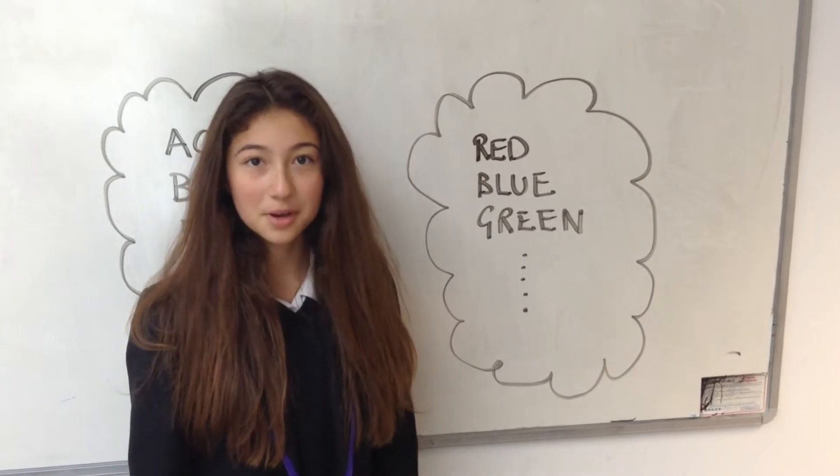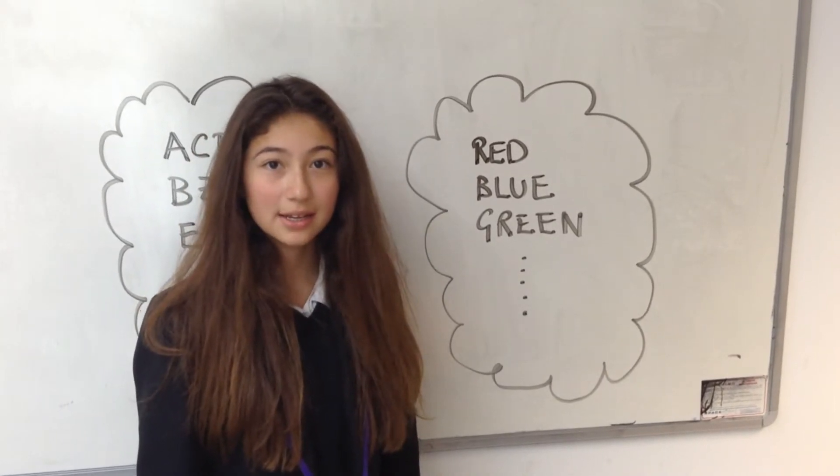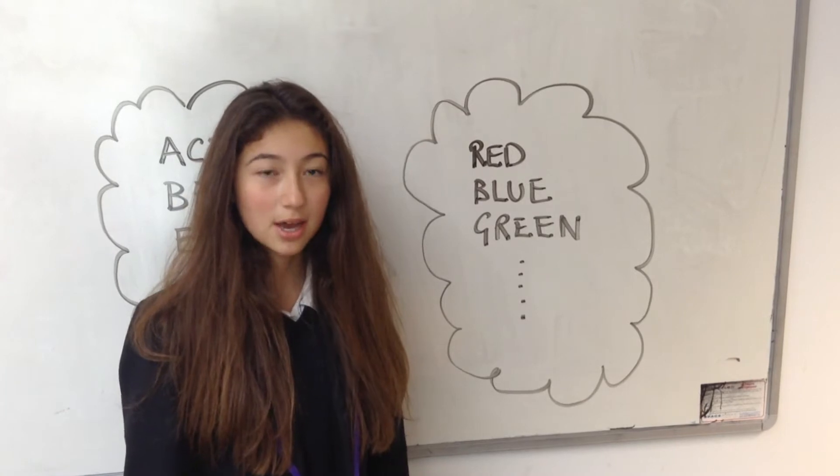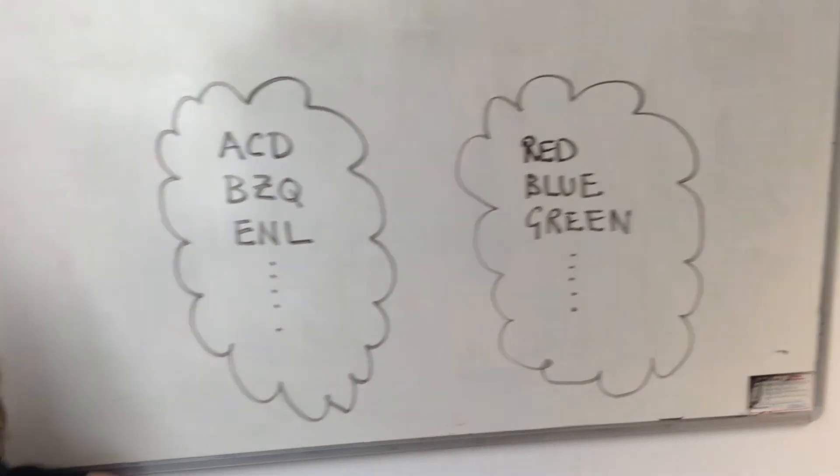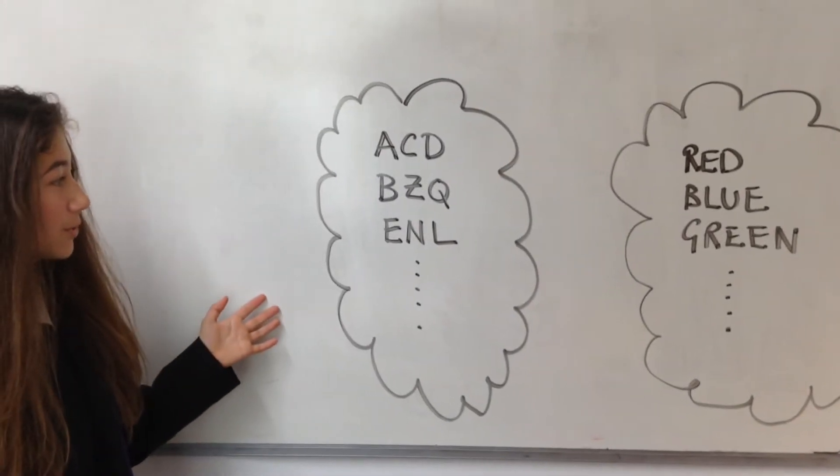Instead of a set of numbers, imagine we had any other set, a collection of arbitrary objects, for example, a collection of colours or a combination of three-letter words.